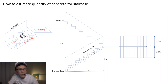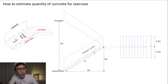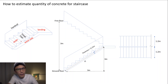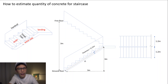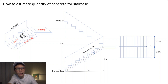The illustration on the left shows the components of a staircase. As we can see, we have the riser, we have the tread, and together they are called steps. Next, we have the waist slab, which is the slab that supports the steps, and we also have a landing, and lastly we have a handrail. Today we will calculate the quantity of concrete for the staircase using three elements: the waist slab, the steps, and the landing.